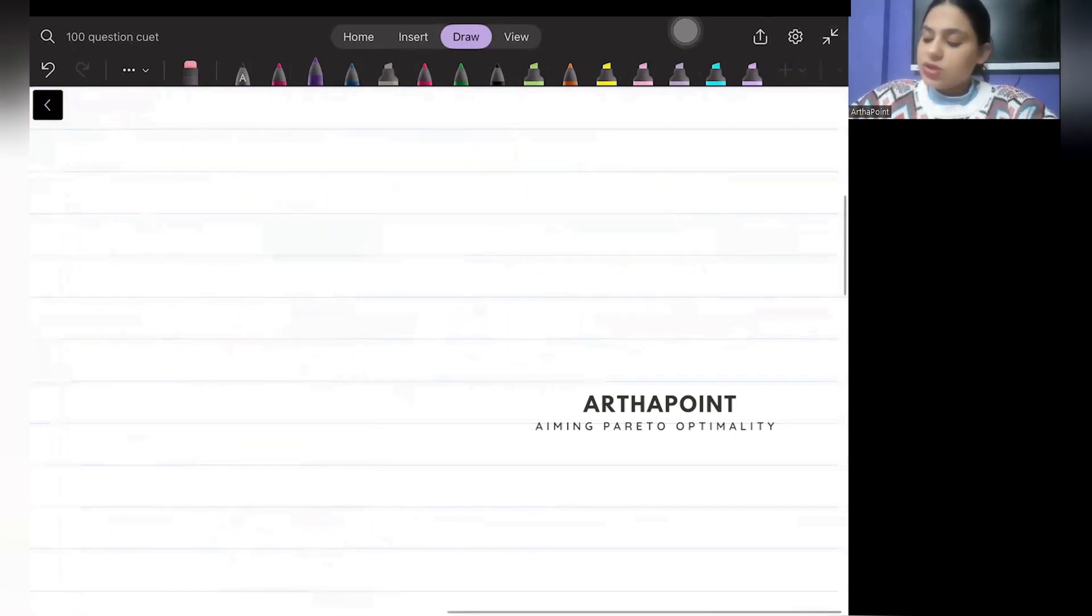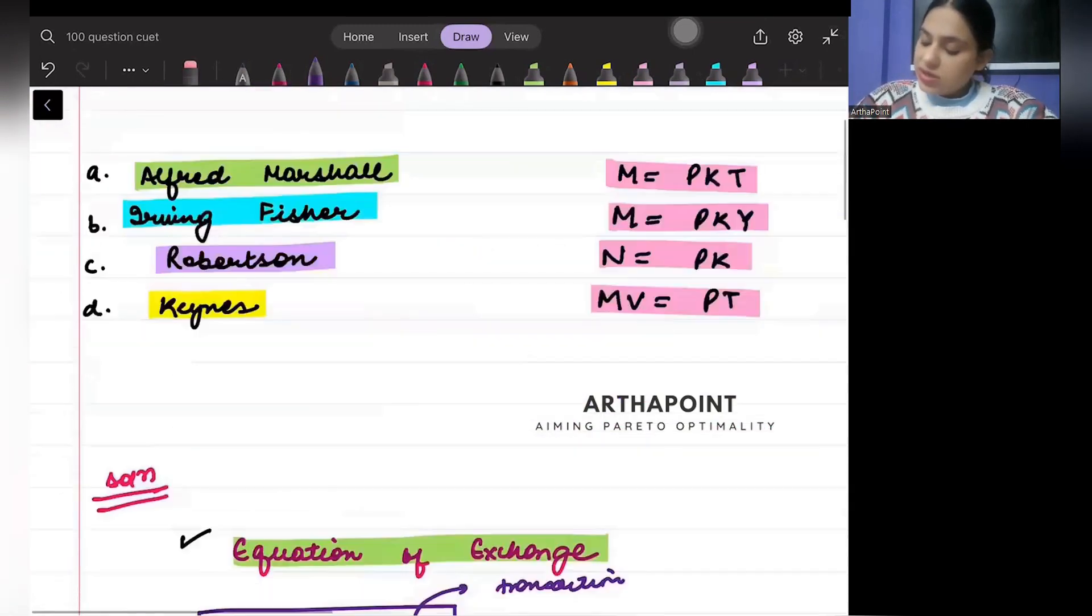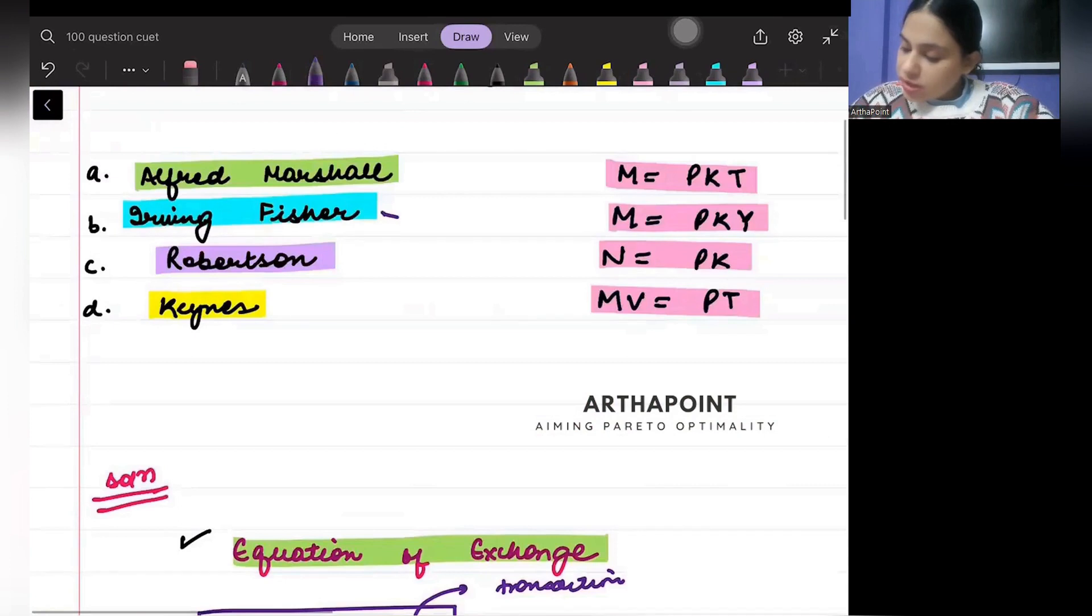Here, M is money, V is velocity, P is price, and T is transaction. This is what he gave. So based on that, you can clearly say that Irving Fisher gave option D.